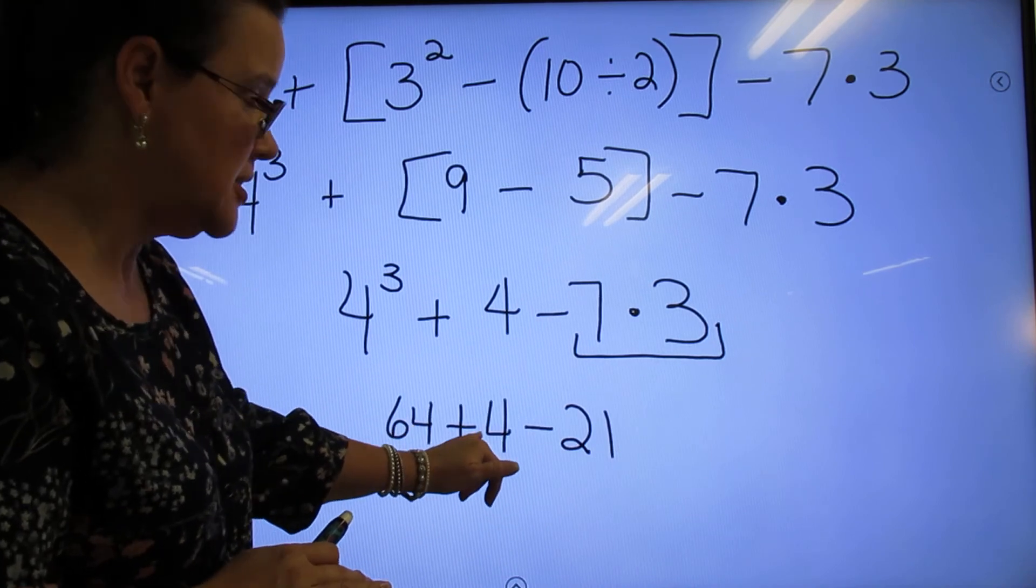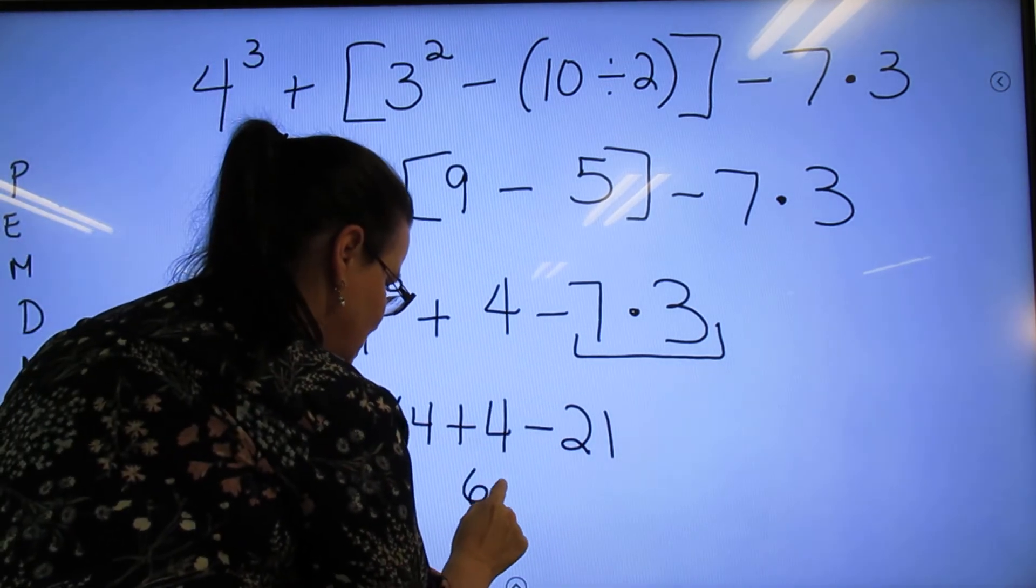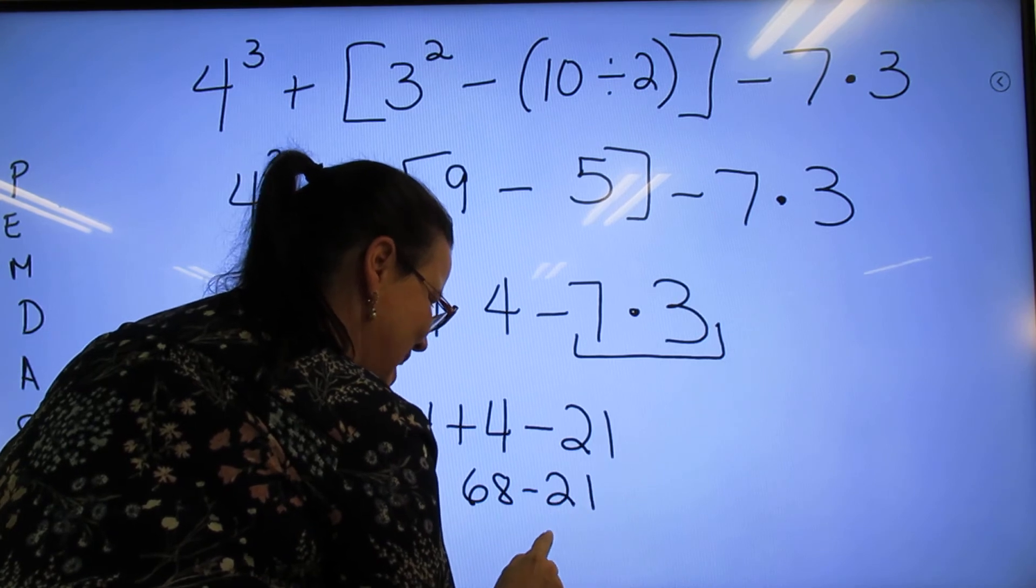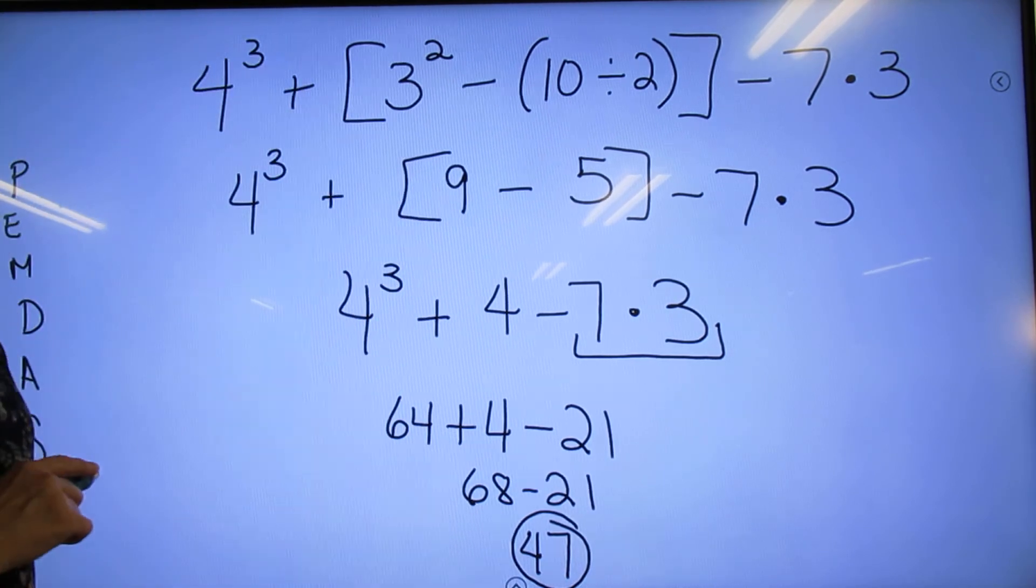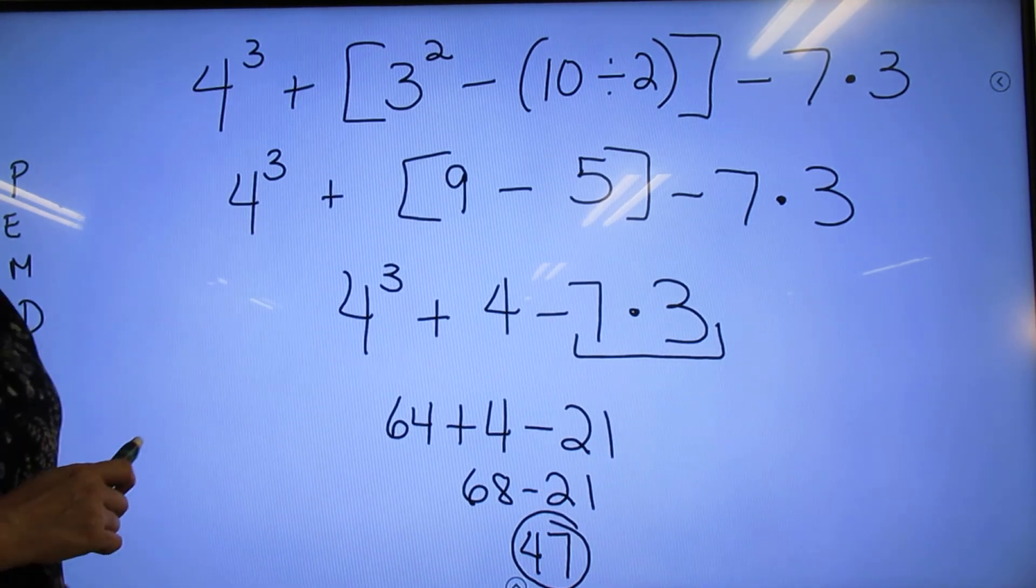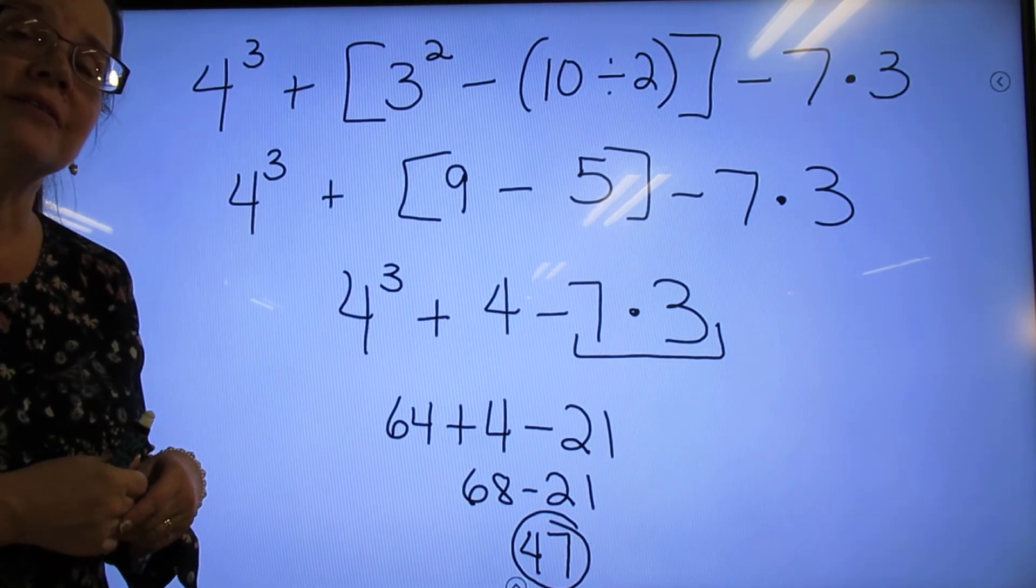Now we can do left to right. 64+4 is 68-21, and then 47. And there you have it. That's your final answer. And that will conclude our orders of operations lesson.